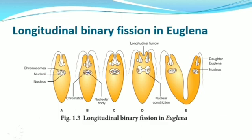Let us see how binary fission occurs in Euglena. In Euglena, the plane of division occurs along the longitudinal axis, dividing the organism into two daughter individuals. During binary fission, the nucleus divides by mitosis. Euglena is a flagellate organism and possesses only one flagellum, so it cannot be equally distributed to the two daughter individuals. Therefore, the basal granule at the base of the flagellum divides into two, and a new flagellum arises from the new basal granule in the other daughter individual.